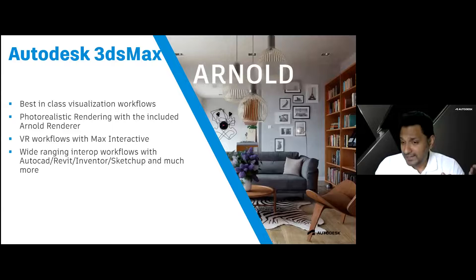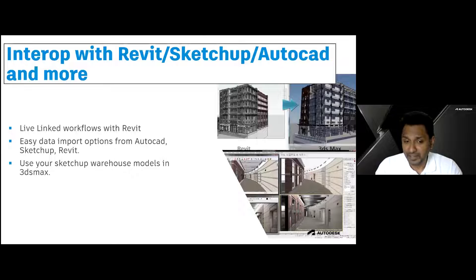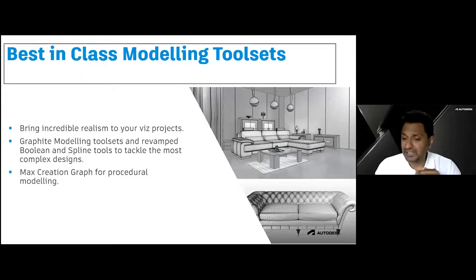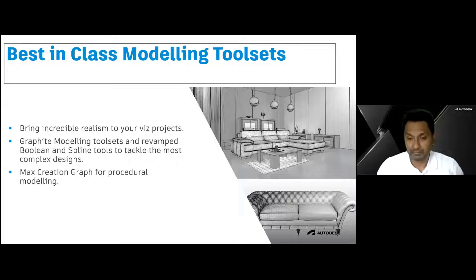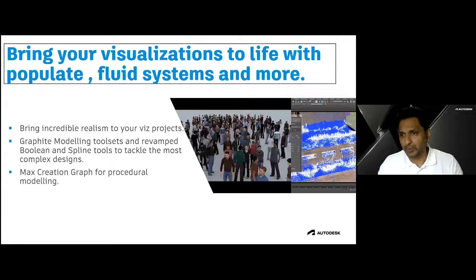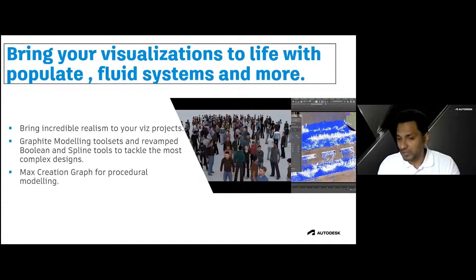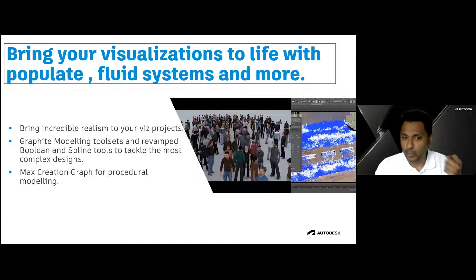It has a very seamless interlock between SketchUp and Autodesk products. There's a live link between Revit — you can easily export and import data between AutoCAD, SketchUp, and Revit and use 3ds Max. 3ds Max has one of the best modeling tools where you can create any kind of complex models — be it furniture, buildings, flooring, or lampshades. The Populate and Fluid Simulations tools help you create crowd effects for malls or parks, making scenes more realistic. If you want fountains, rain, or any kind of liquid simulation, the fluid systems of 3ds Max make it much more appealing. And it also has a one-step VR workflow — be it Unreal, Unity, or Autodesk's own VR solution, Max Interactive, which comes free with 3ds Max.